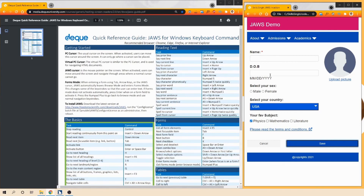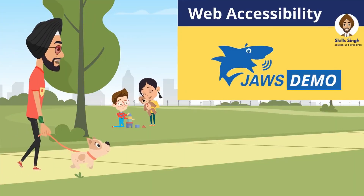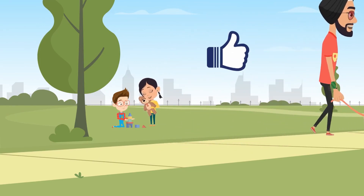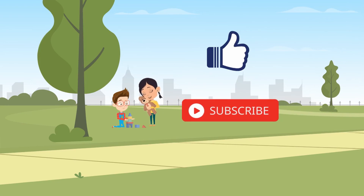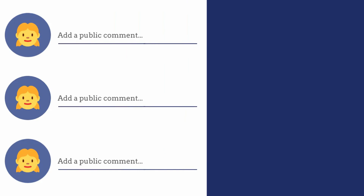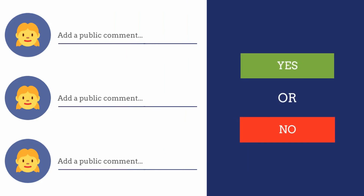We have covered all the basic form elements in this video. I trust this helped you understand how a screen reader actually behaves. Please help me by clicking the like button and subscribing to the channel to keep improving web accessibility for your web applications. In our next video we will cover slightly more complex elements such as drag and drop, notifications, ARIA live, and so on. Please comment yes or no if this video helped you. See you in the next video - till then, keep coding!